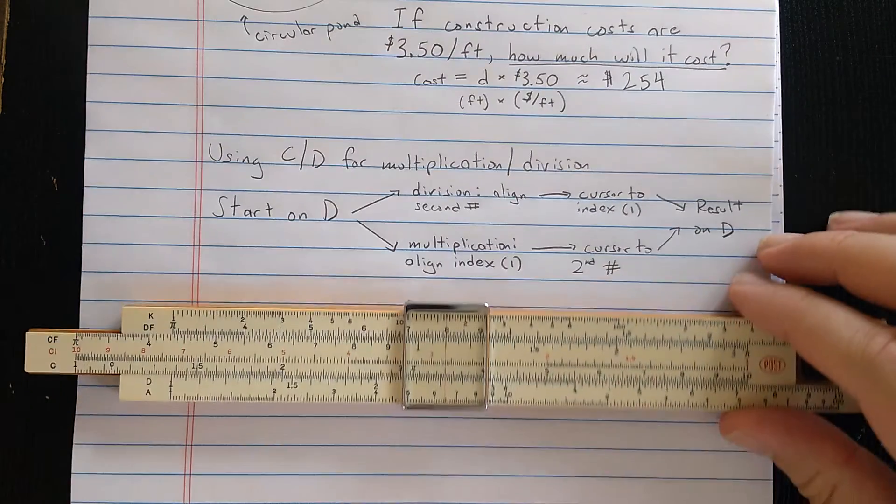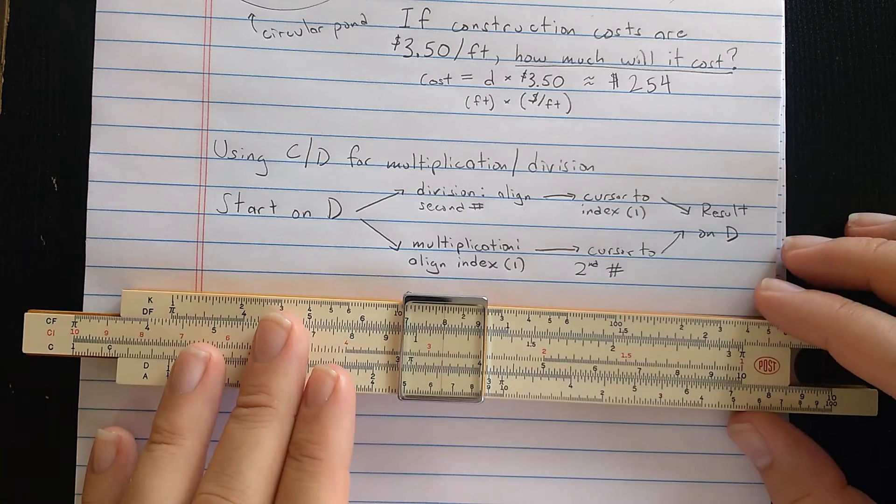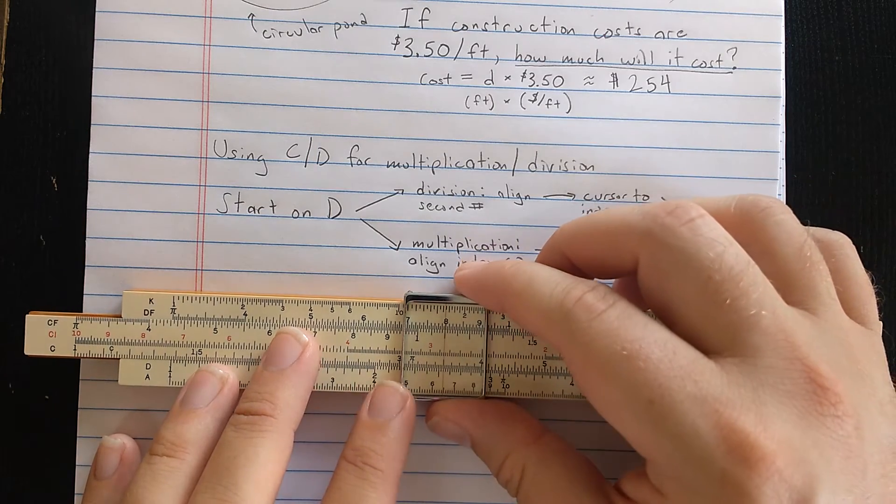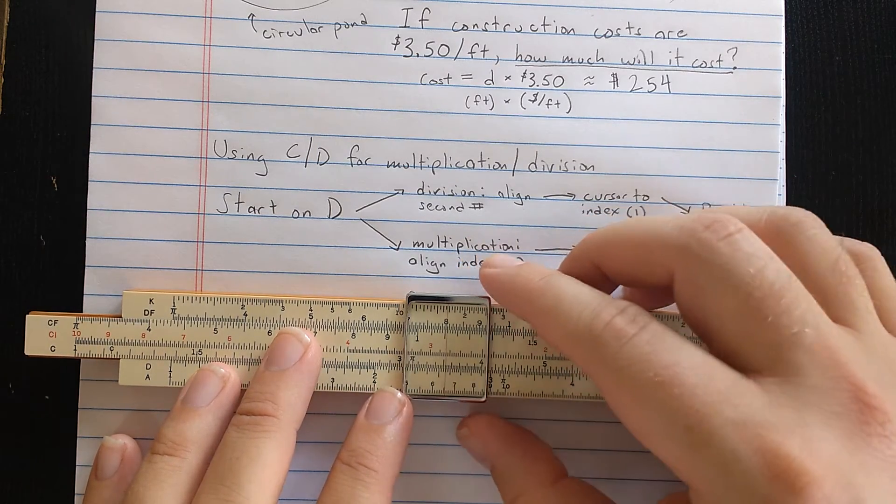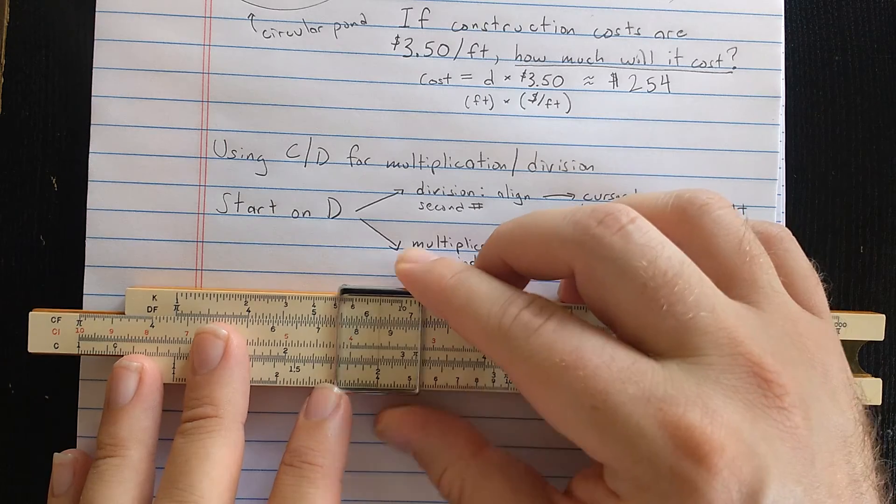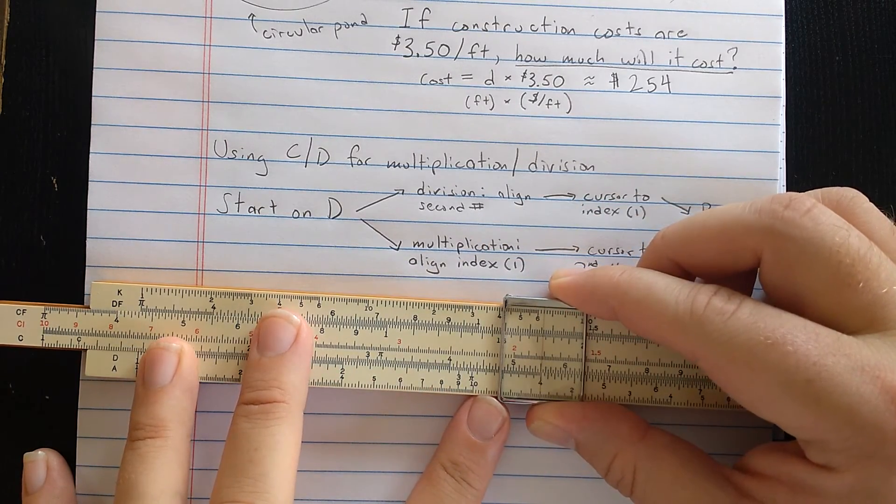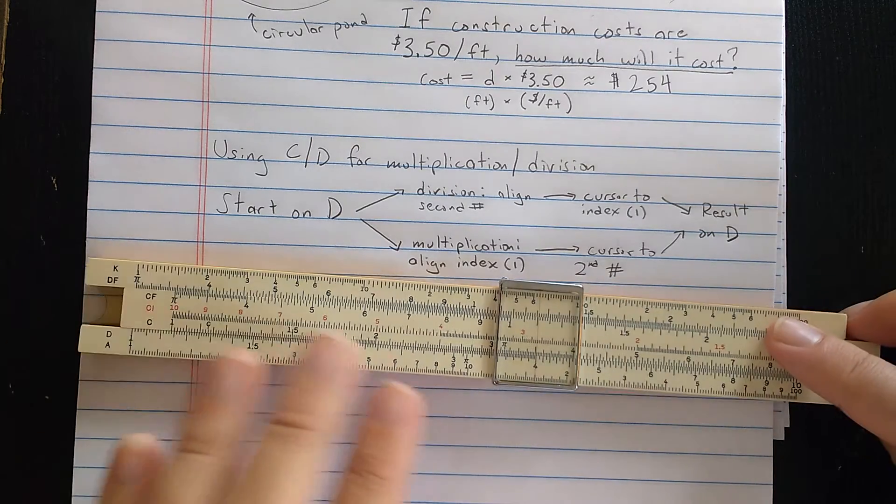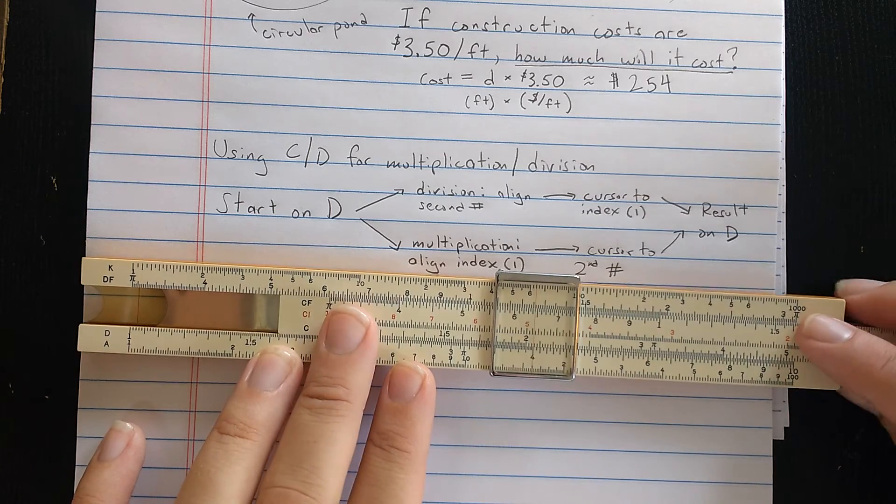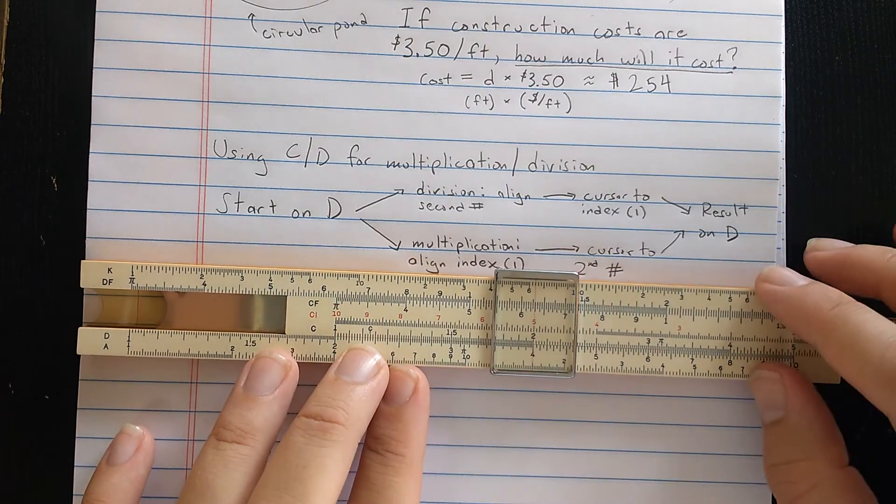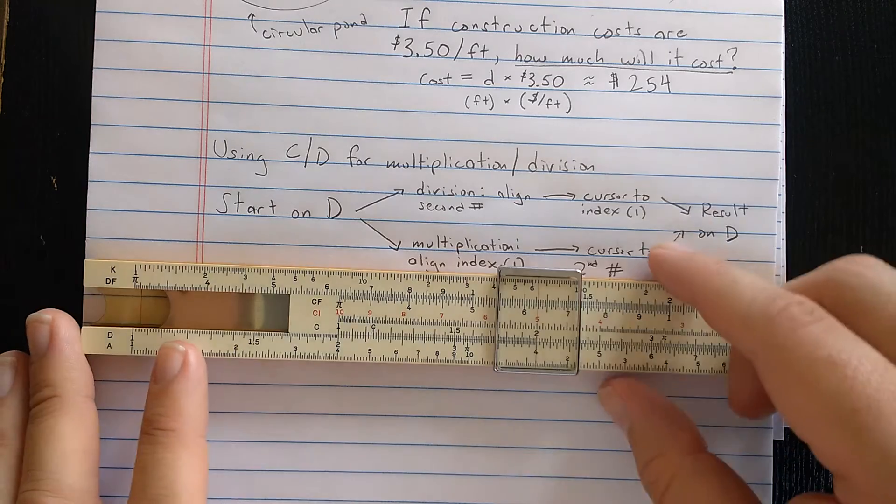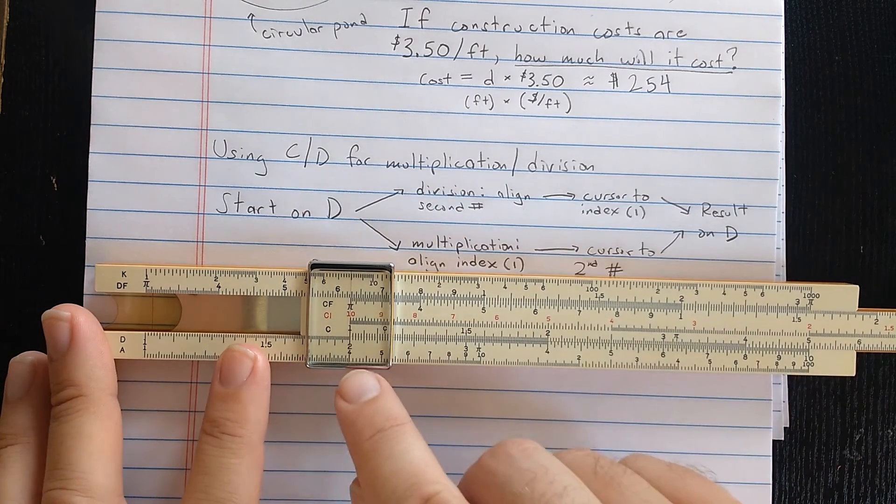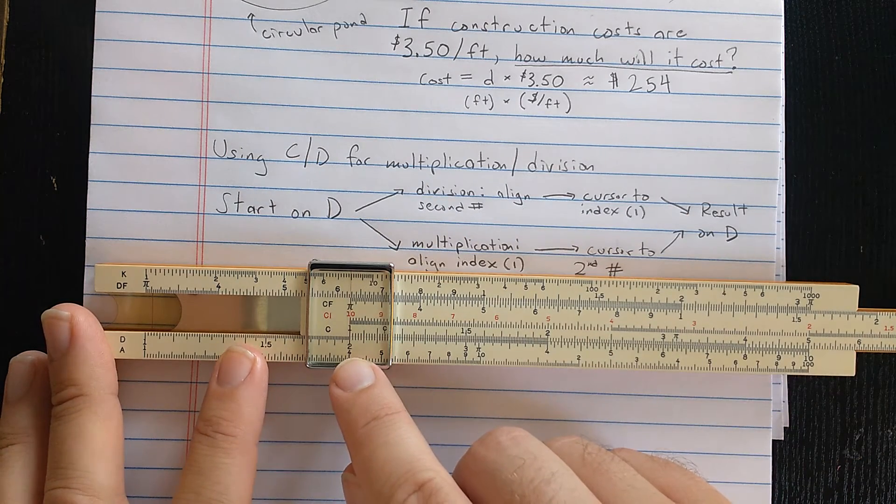So to review, using C and D for multiplication and division. For division, let me do another example. Let's say I want to divide 4 by 2. So I find the 4 on the D scale. Then I align the 2 with it from the C scale under the cursor. Then the result is at the index, whichever one you can find with the cursor. Here, it's the left index. And the correct result, 2, is on the D scale underneath.